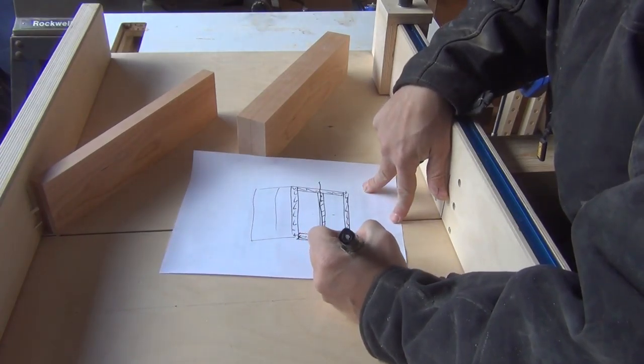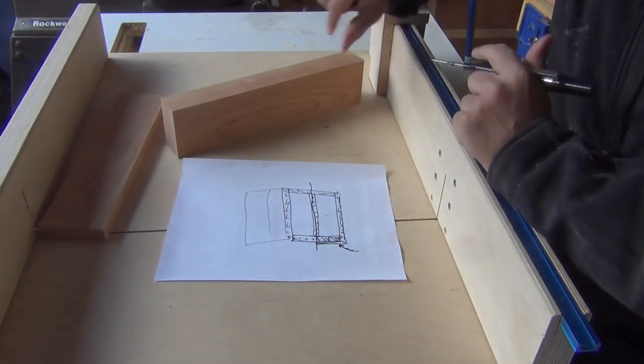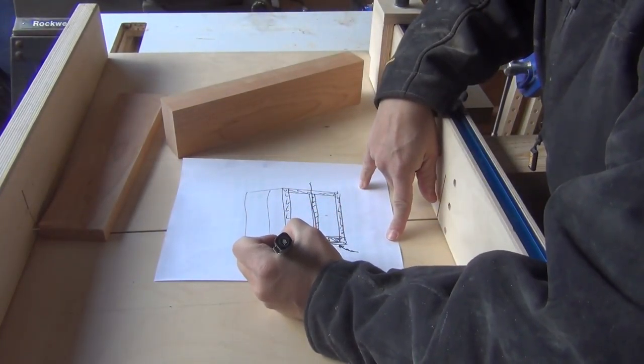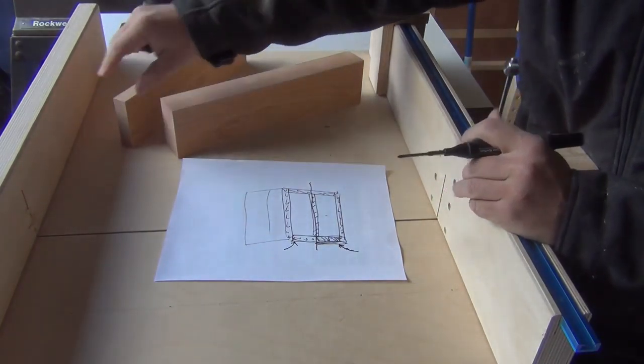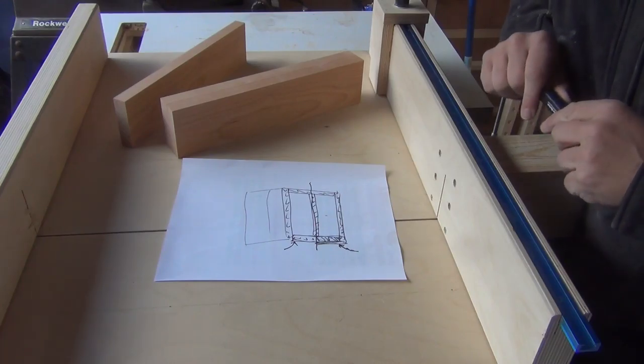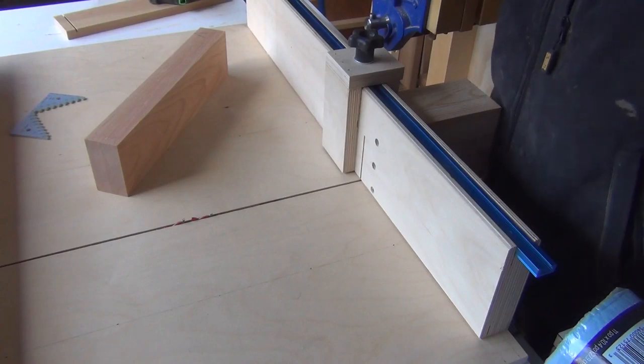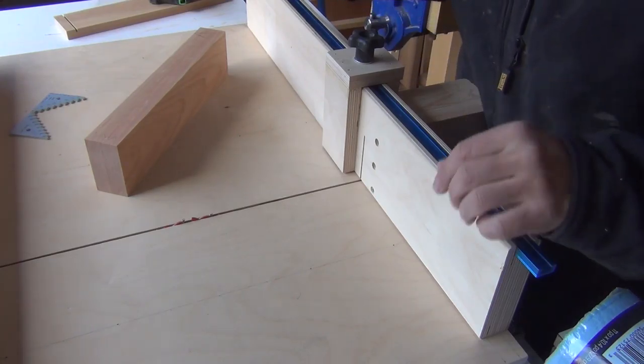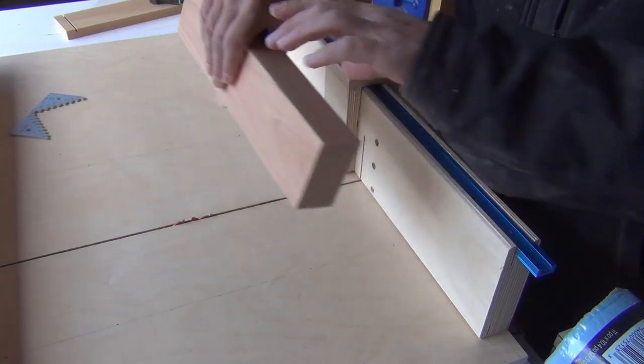So now what I need to do is add some joinery to these pieces. So it's all going to be mortise and tenon. So I need to add a tenon on the end of this thicker piece here at the back, and a tenon on the end of the thinner piece at the front. And I do that using the crosscut sled.